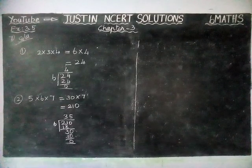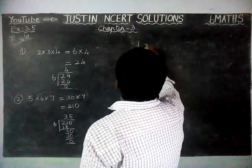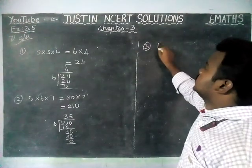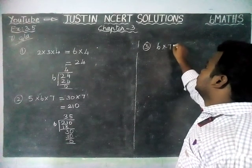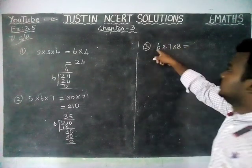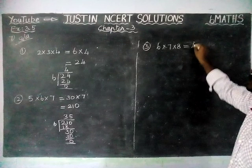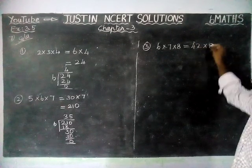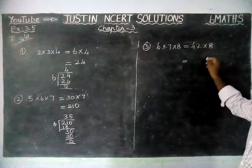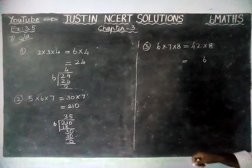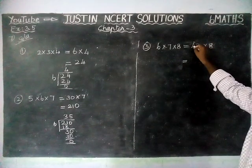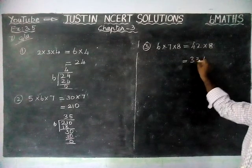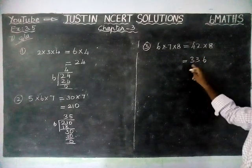Next, we are going to see the third example. We are going to take consecutive numbers 6, 7, 8. 6 sevens are 42, into 8 is equal to 336.